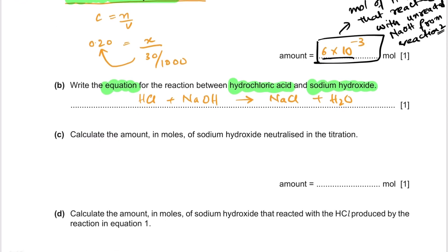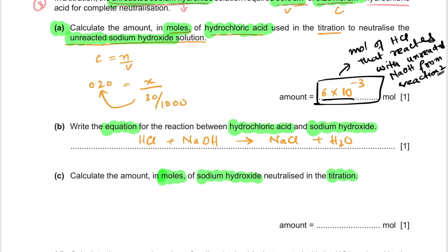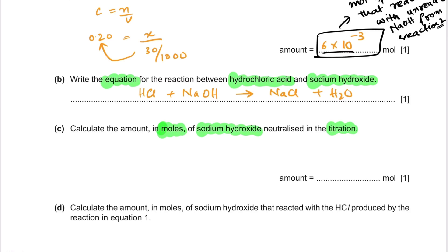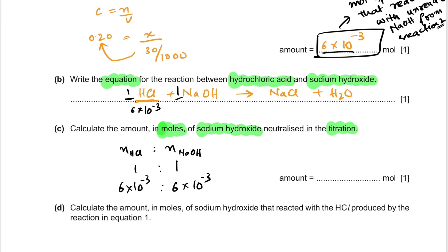Next, calculate the amount in moles of sodium hydroxide neutralized in the titration. We already calculated the moles of HCl as 6×10⁻³. Since the molar ratio between HCl and NaOH is 1:1, the moles of NaOH neutralized in the titration is also 6×10⁻³ mol.